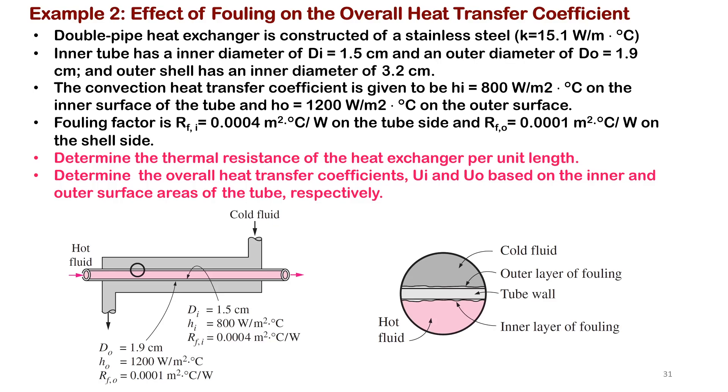We have hot fluid in the middle and cold fluid on the outside. The pipe is made from stainless steel with thermal conductivity given. Inner diameter Di = 1.5 cm and outer diameter Do = 1.9 cm, so you know the thickness of the steel pipe. The convective heat transfer coefficient for the inside is hi = 800 W/m²·°C, for the outside ho = 1200 W/m²·°C. We also have the fouling factor for inside and outside.